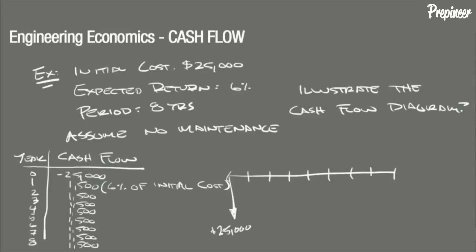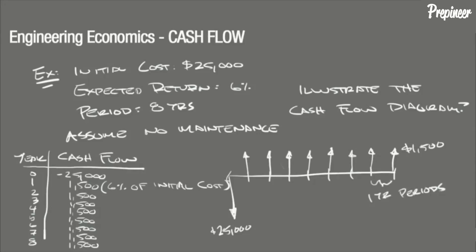At the end of year one, the expected return on the investment begins to be recognized by the business owner. This is a receipt of $1,500, or 6% of the original price of the equipment. This receipt is recognized for the remainder of the defined period of eight years, so we put vertical lines all the way to the end. These receipts are illustrated on the cash flow diagram as positive vertical arrows at annual increments.